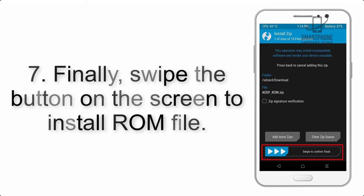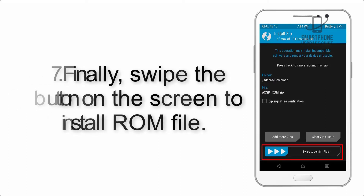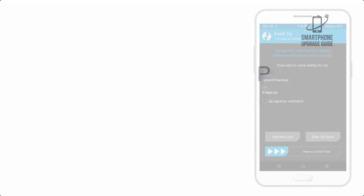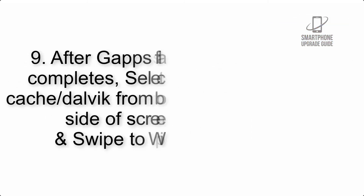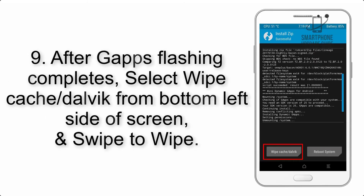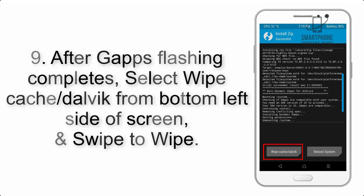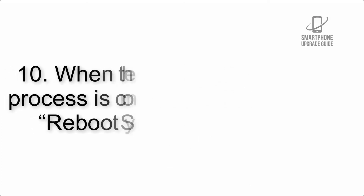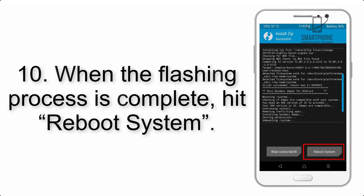Step 7: Swipe the button on the screen to install the ROM file. Step 8: Flash the GApps zip package in the same manner. Step 9: After GApps flashing completes, select Wipe Cache and Dalvik from the bottom left side of the screen and swipe to wipe.